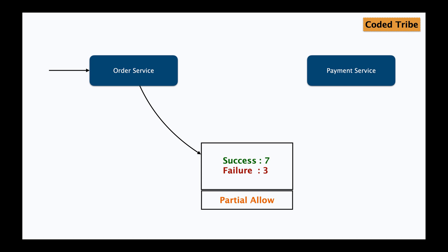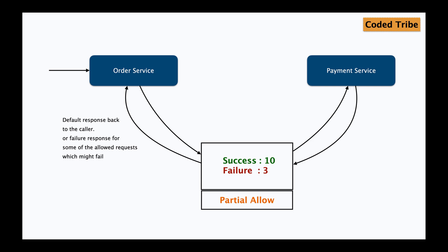But if the payment service is now up and working as expected, those partial requests will return successful responses back to the order service. After consecutive successful responses from the partially allowed requests, the interceptor again checks the last few transactions. If all of those transactions succeeded, the interceptor determines the failure rate is below the threshold and the payment service is up again, so it allows all requests once more. This is the whole cycle: the request interceptor intercepts all outgoing requests, allows or disallows them based on a threshold, returns a default message when the called service is down, and resumes normal flow when it recovers.